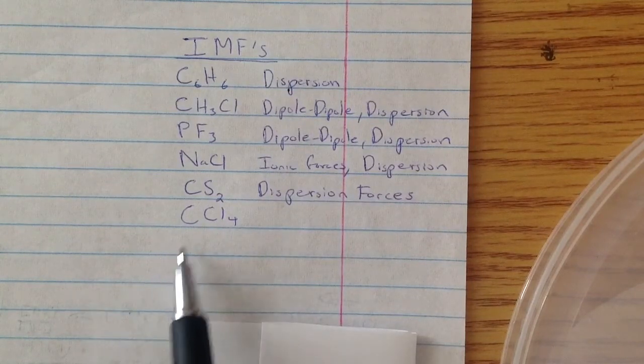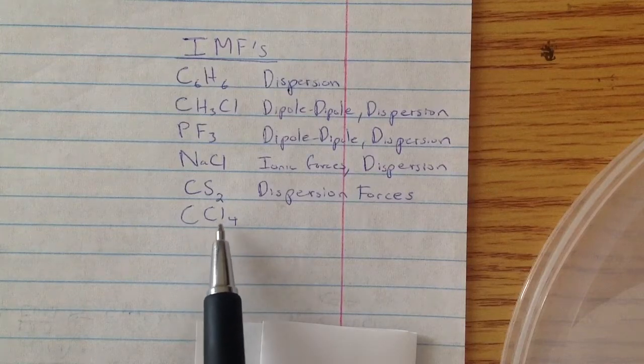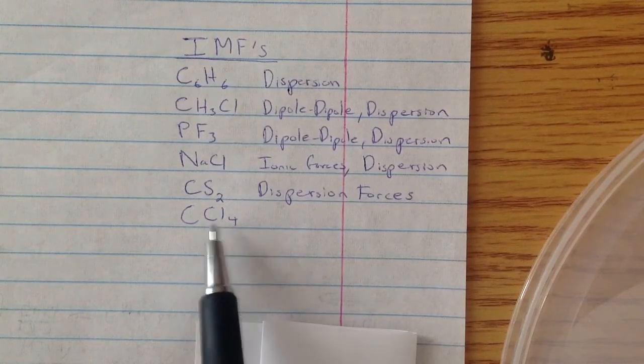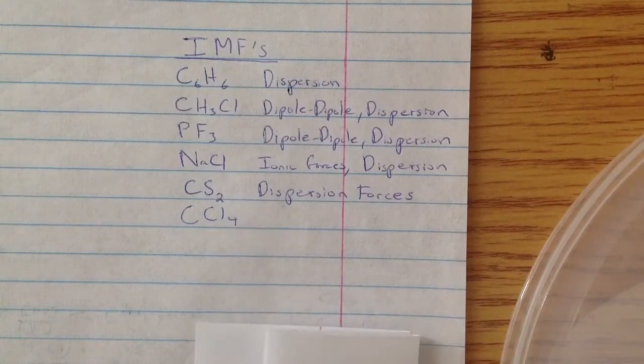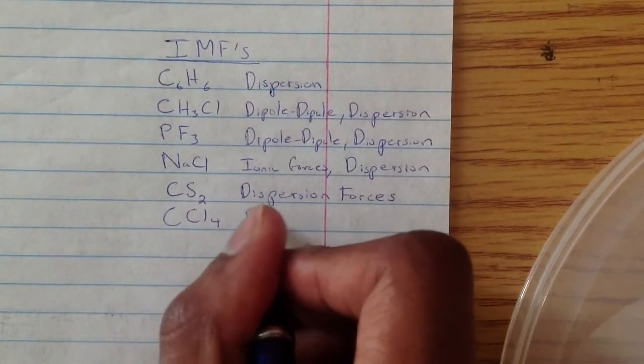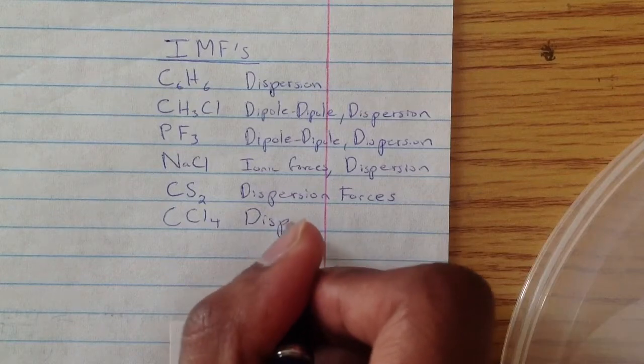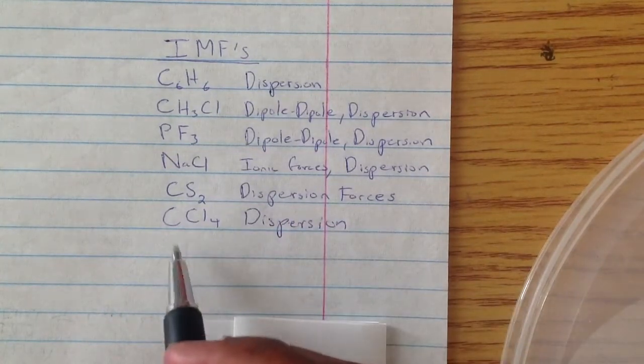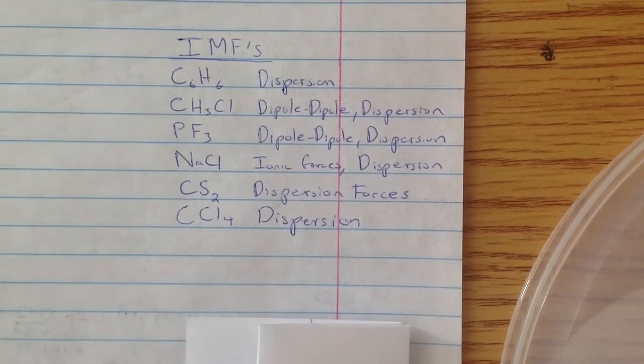So even if each individual bond is polar, if they all combine and make a non-polar structure, then it would only be dispersion forces. So this would actually just be dispersion because the tetrahedral structure makes it so that it's non-polar.